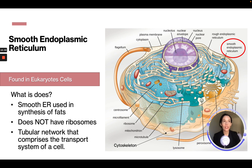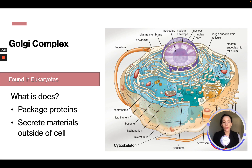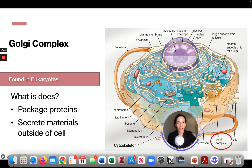On the exam, questions will likely ask which structure synthesizes fats — the answer is the smooth endoplasmic reticulum — or which structure has ribosomes — the answer is the rough endoplasmic reticulum. The cell wall is found in prokaryotes, plants, and fungi cells and is a stiff outer cell structure. The Golgi complex packages proteins and secretes materials outside the cell.